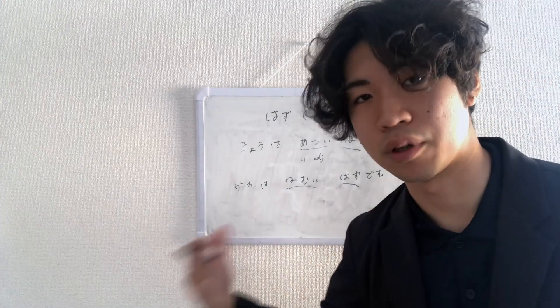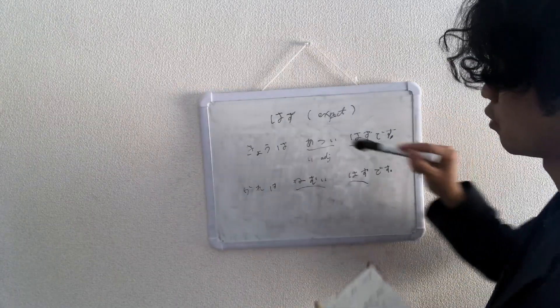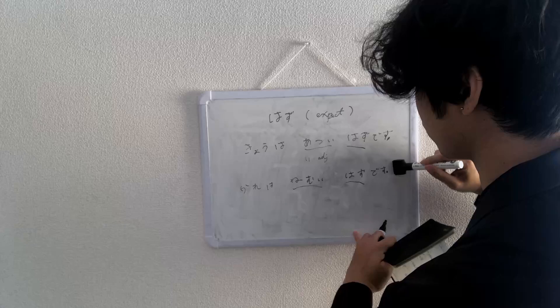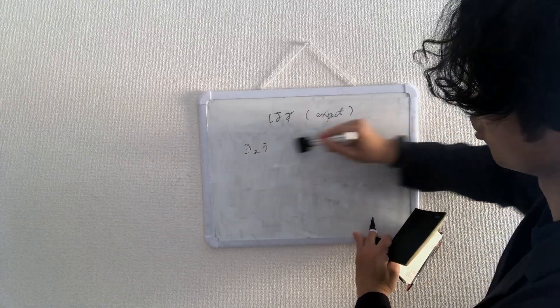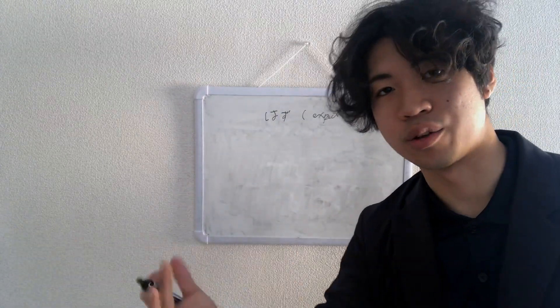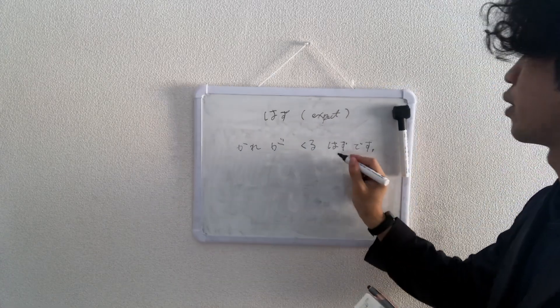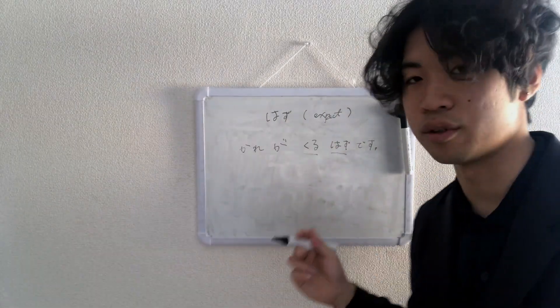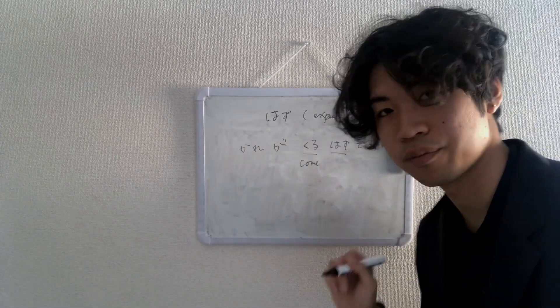Now let's look at verbs. You want to make sure when making verb sentences with はず, you are using informal or dictionary form. Let's look at 彼は来るはずです.